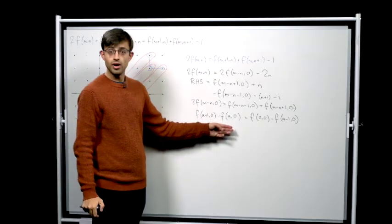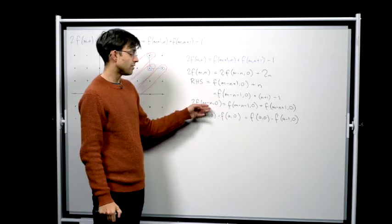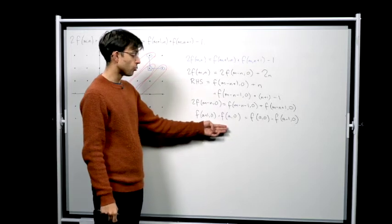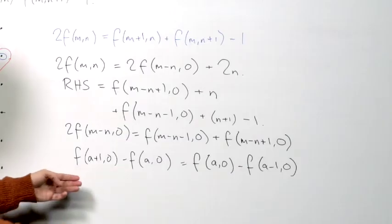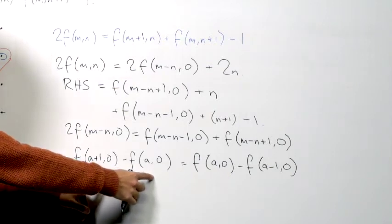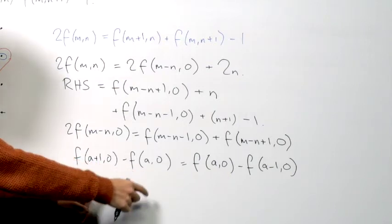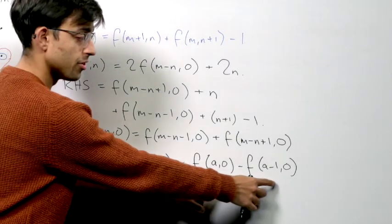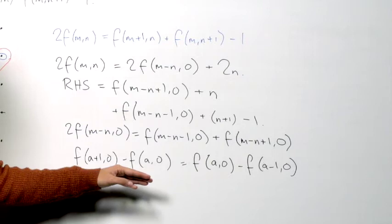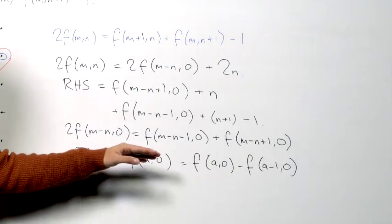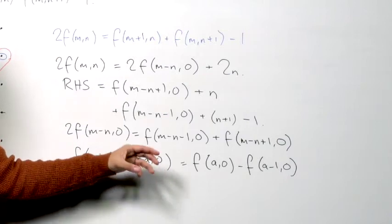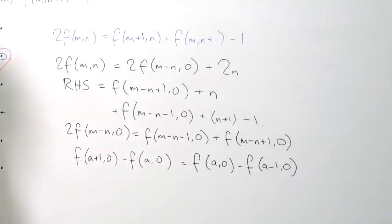Here I've substituted a for m minus n, and I've moved some terms around. So what I've ended up showing is that the difference between these two consecutive values of f on the x-axis is equal to the difference between these two consecutive values of f on the x-axis. So actually all of these differences between consecutive points on the x-axis are all equal.